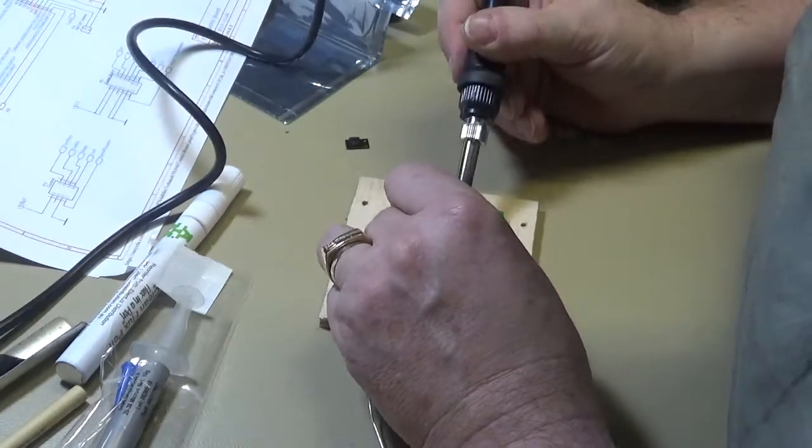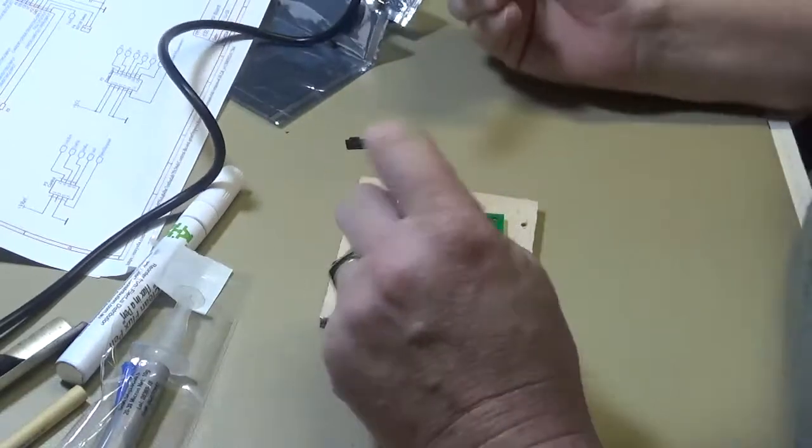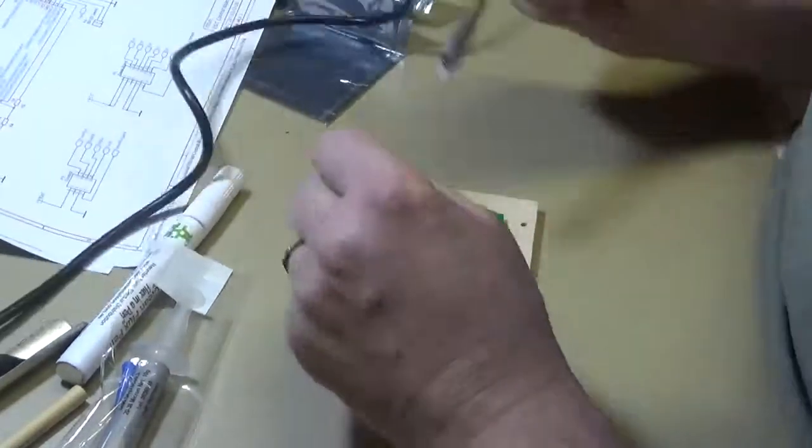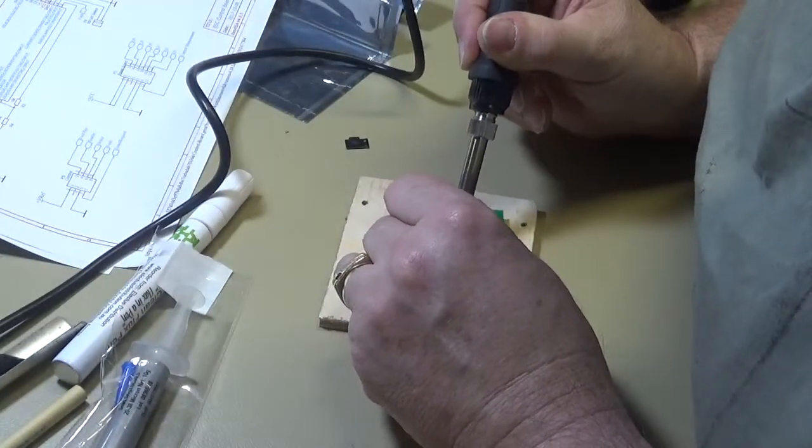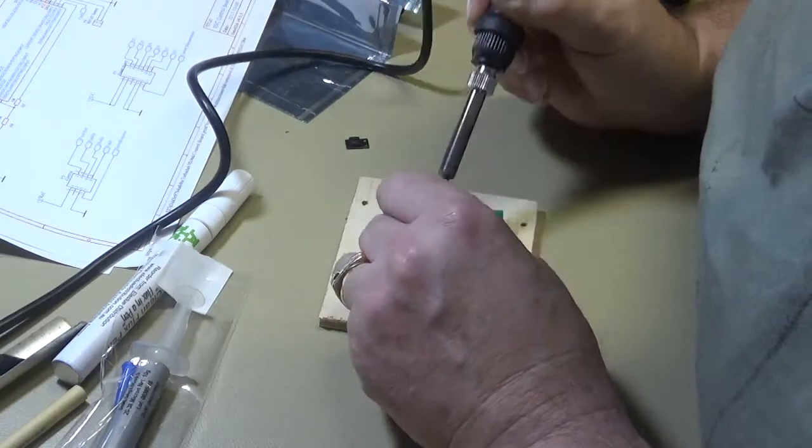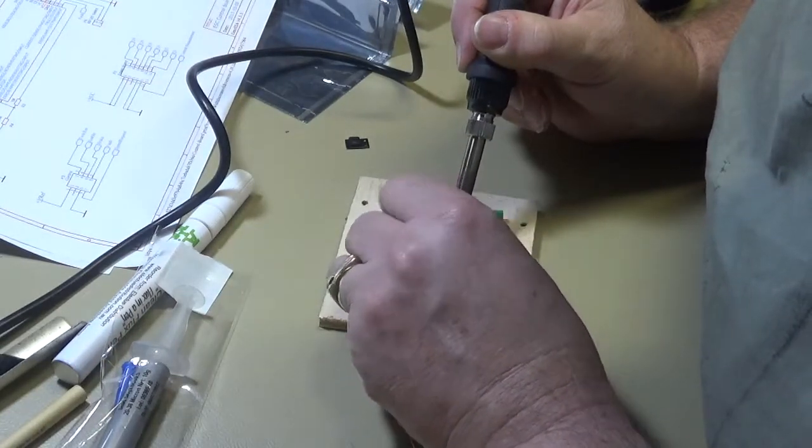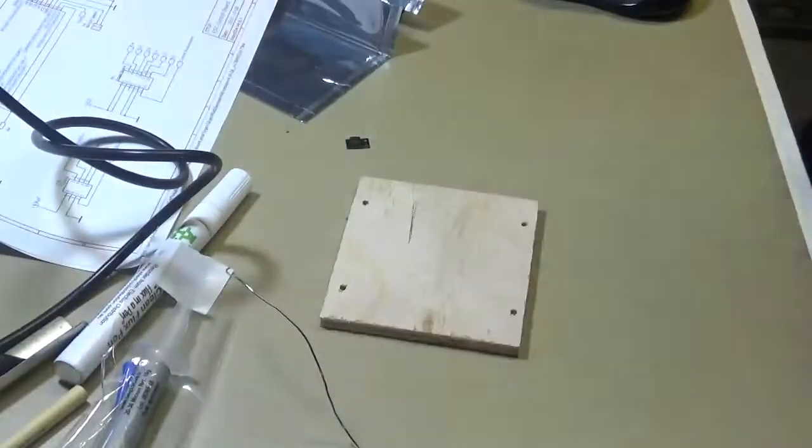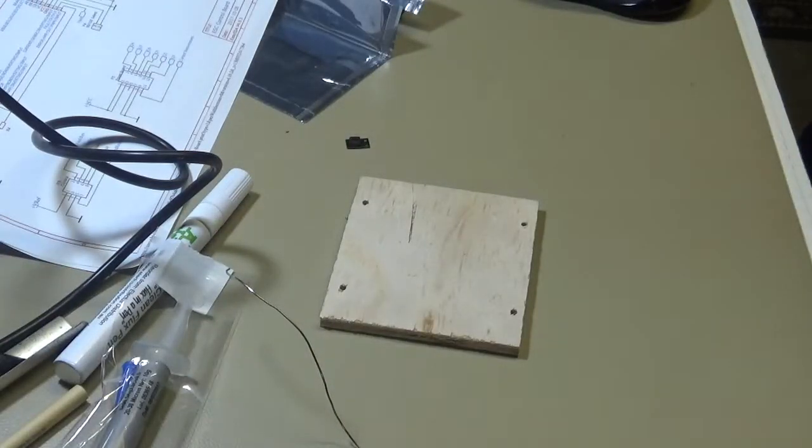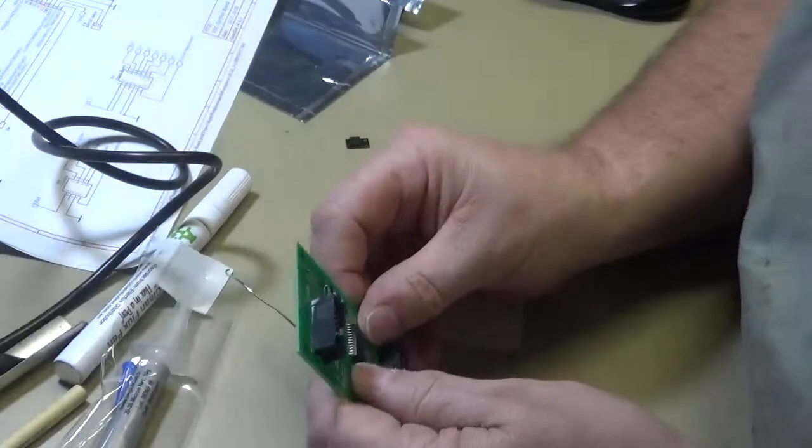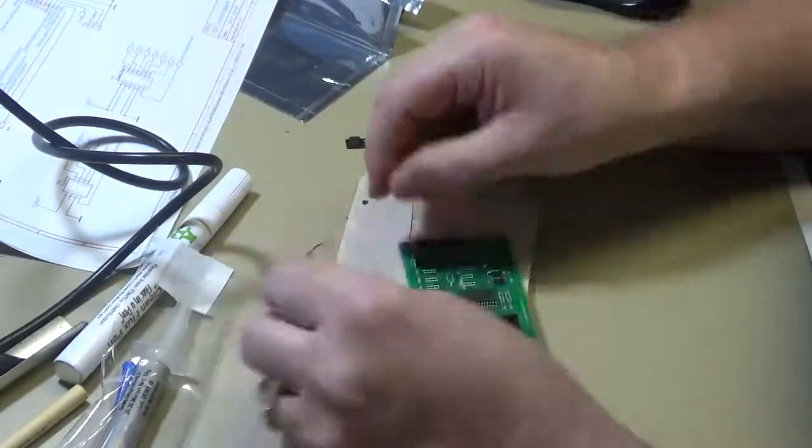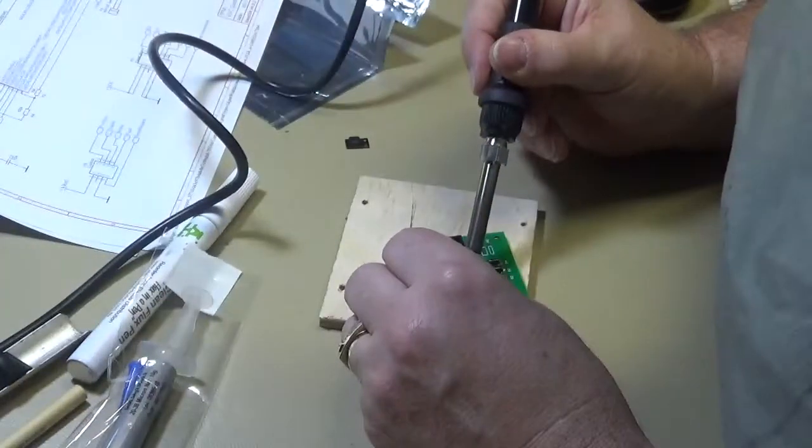Now this actually worked quite well. The components I've got are not particularly fine pitch and to be honest I could probably almost hand solder every pin. But I just wanted to see how I'd go with the drag soldering method. Now when I actually did do it, I found that quite a number of the pins were actually bridged with solder. It was quite obvious, very visible.